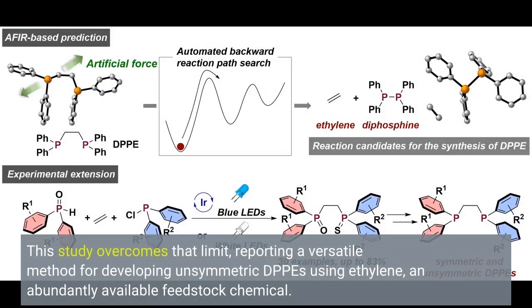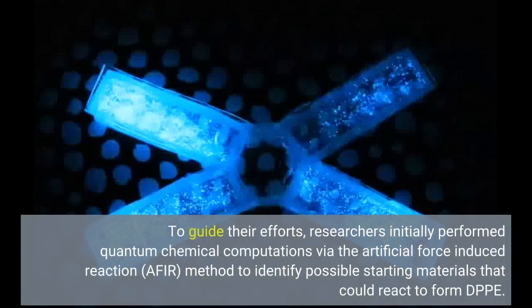This study overcomes that limit, reporting a versatile method for developing unsymmetric DPPEs using ethylene, an abundantly available feedstock chemical. To guide their efforts, researchers initially performed quantum chemical computations via the artificial force-induced reaction, AFIR, method to identify possible starting materials that could react to form DPPE.